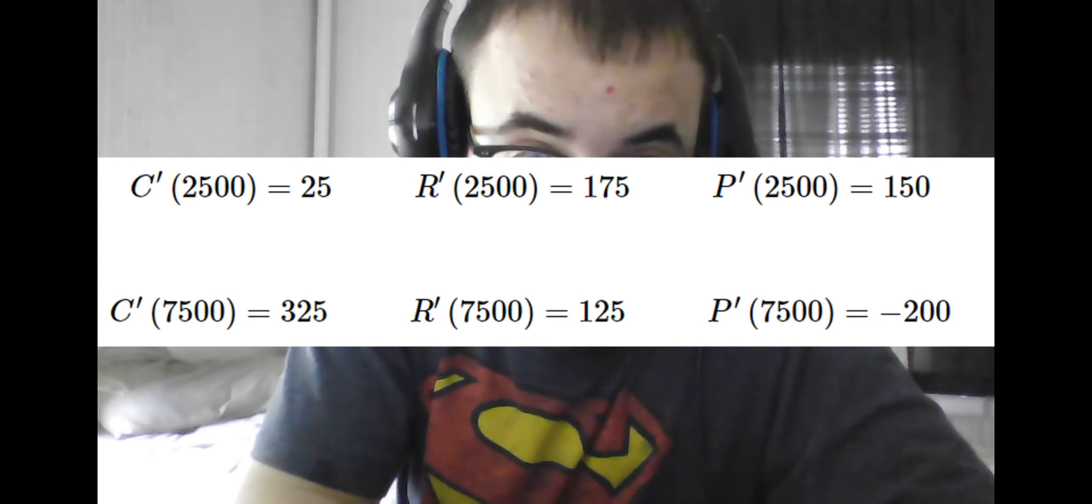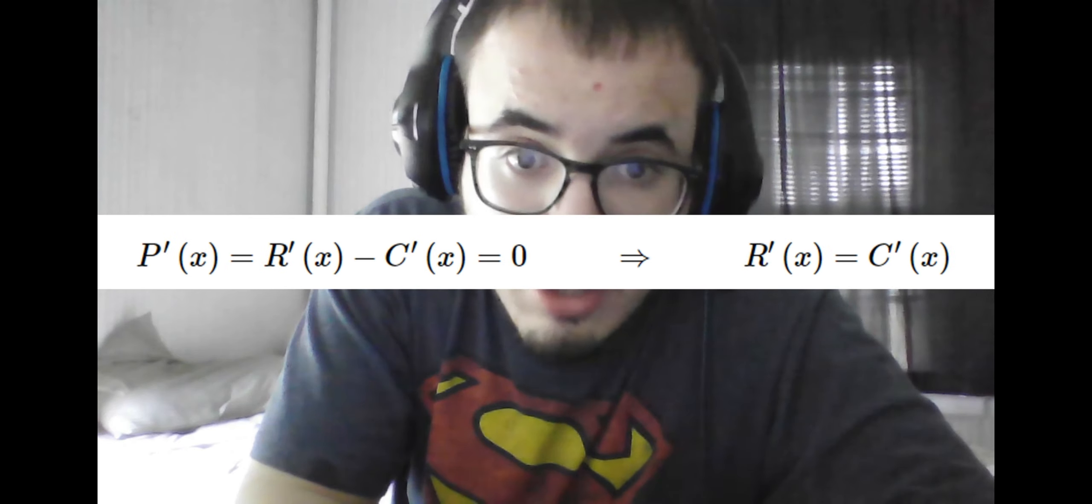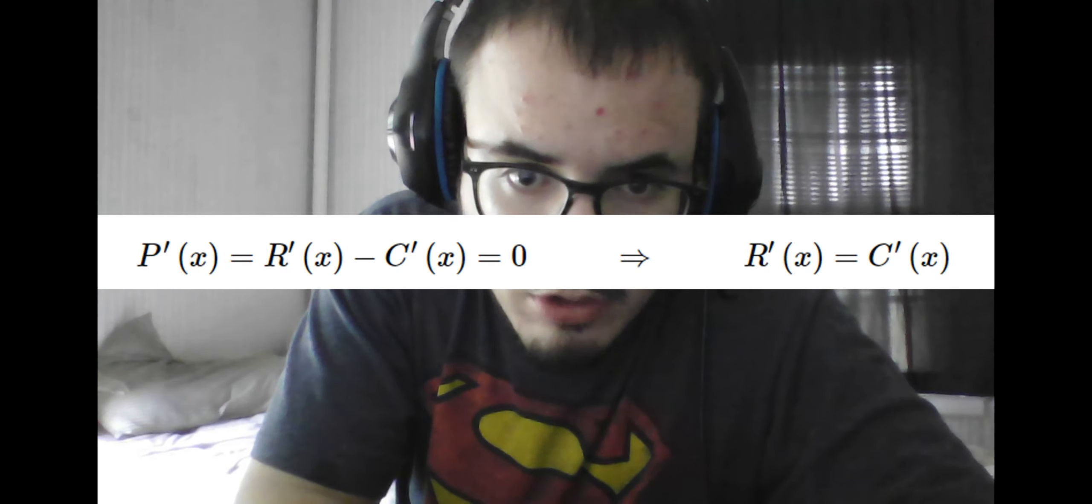We know as well, because of how maximum and minimum functions work in general, that the profit will be maximized when its derivative equals 0, as the maximum point is a critical point.